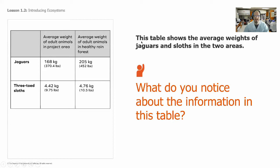This table shows the average weight of the jaguars and the sloths in the two areas. What you should have noticed is that both the jaguars and the sloths weigh less in the project area than the same species weigh in the healthy area. So what might it mean if the animals in the project area weigh less than the animals in the healthy rainforest?